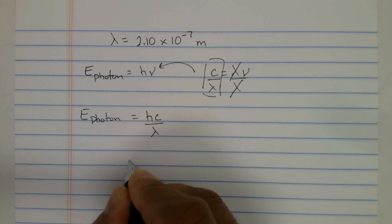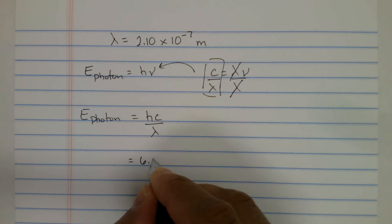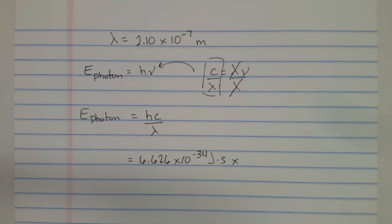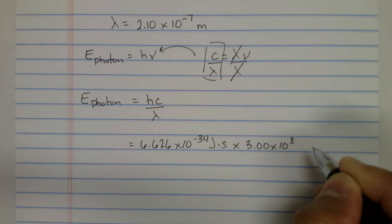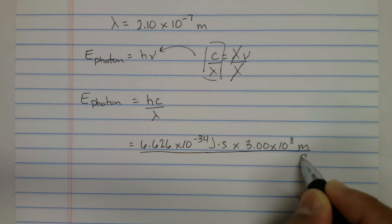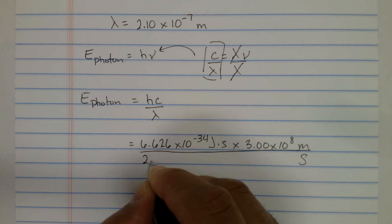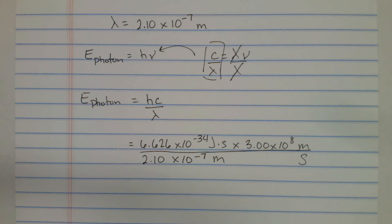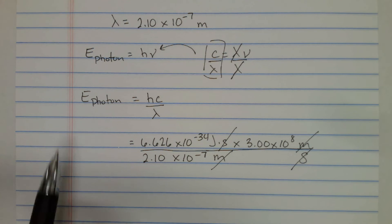So in the numerator we have Planck's constant times the speed of light, divided by the wavelength: 2.10 times 10 to the minus 7 meters. Notice that meters cancel, seconds cancel, and the energy of the photon is left in units of joules, as expected.